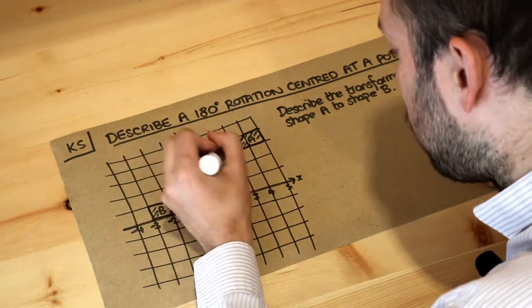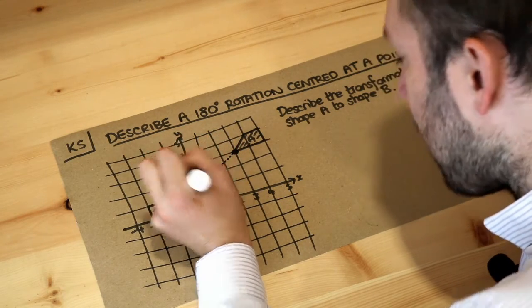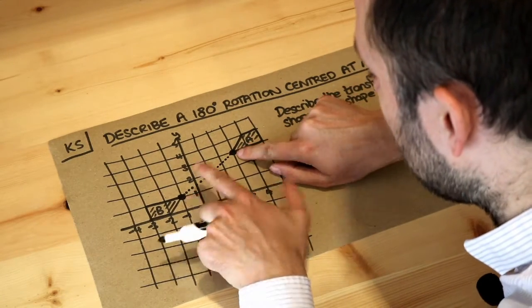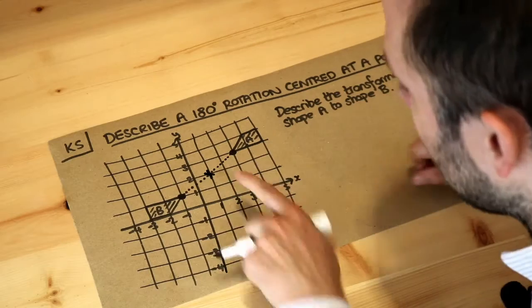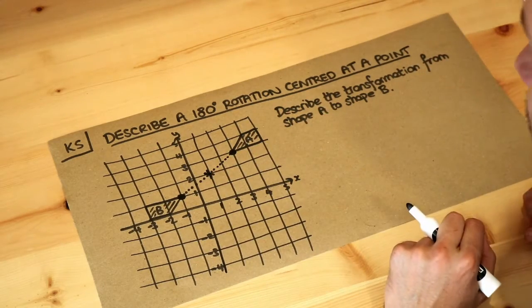What you then do is join these points up with a ruler and take the midpoint of these two. Can you see that this point here is halfway between these two points, and that is the center of rotation.